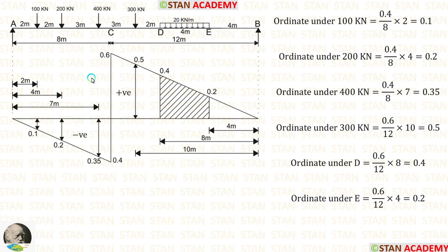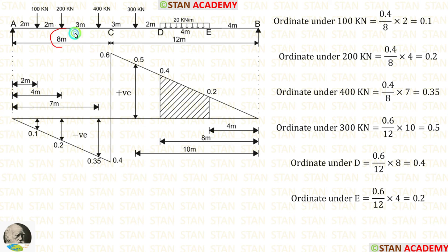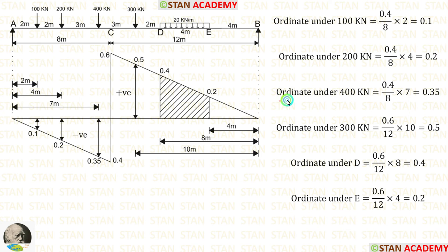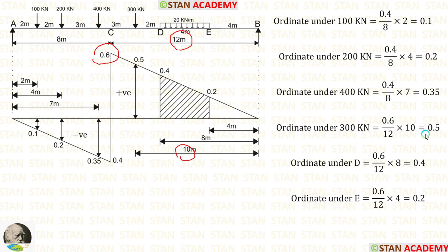Now let us calculate the other ordinates. For 8 m it is 0.4, but for 2 m we are getting 0.1. For 8 m it is 0.4, but for 4 m we are getting 0.2. In the same way, we have to calculate the ordinate under the 400 kN load: for 12 m it is 0.6, but for 10 m we are getting 0.5. In the same way, we calculate the ordinate under point D and point E.